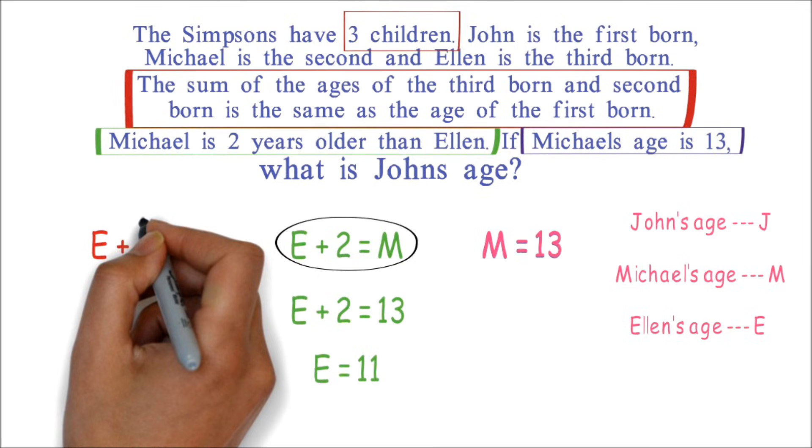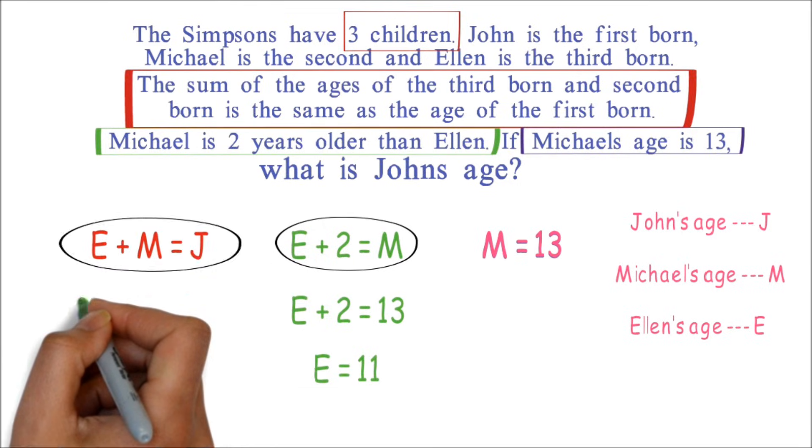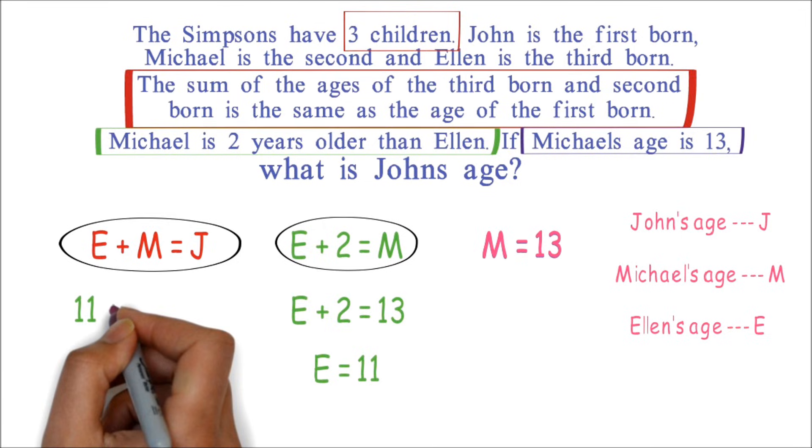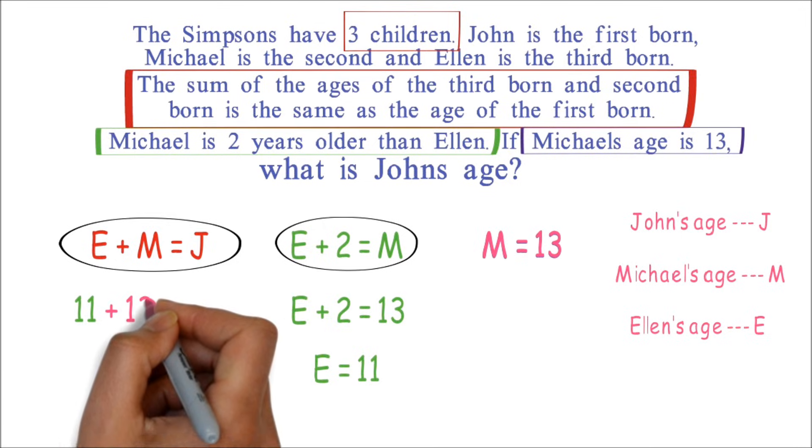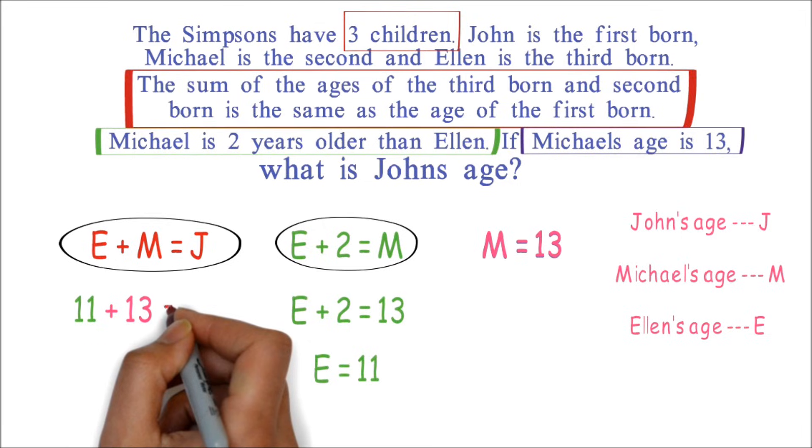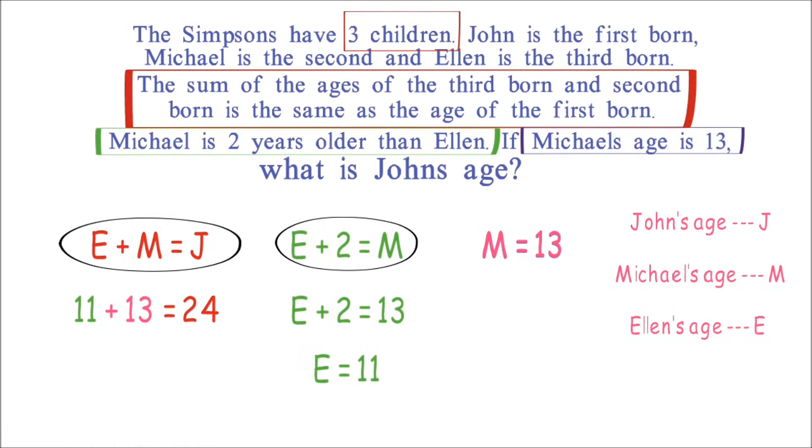This means Ellen is 11 years. To find John's age, which is what the question is asking, we know that E plus M equals J. We know Ellen's age to be 11 and Michael's age to be 13. We add the two to get 24. John is therefore 24 years.